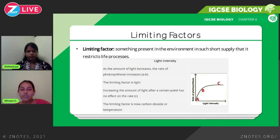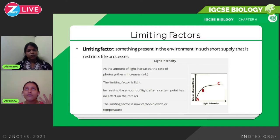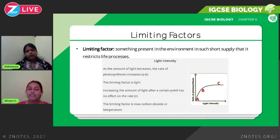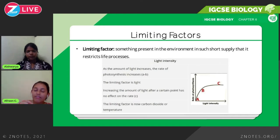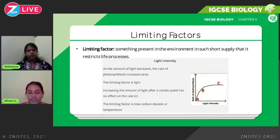Now we're looking at limiting factors — something you need to memorize. A limiting factor is something present in the environment in such short supply that it restricts life processes. For plants, limiting factors could be light intensity, carbon dioxide concentration, and temperature. Looking at a graph of light intensity: from point A to point B, the rate of photosynthesis increases as light intensity increases. After point C, increasing light intensity has no effect — the limiting factor becomes something else like CO₂ or temperature.